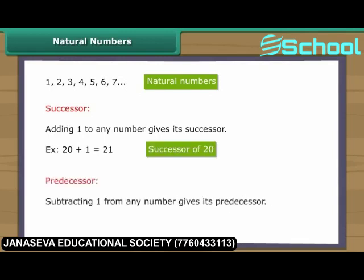Subtracting one from any number gives its predecessor. For example, subtracting one from twenty gives nineteen, which is the predecessor of twenty. Interesting question: What is the largest natural number?